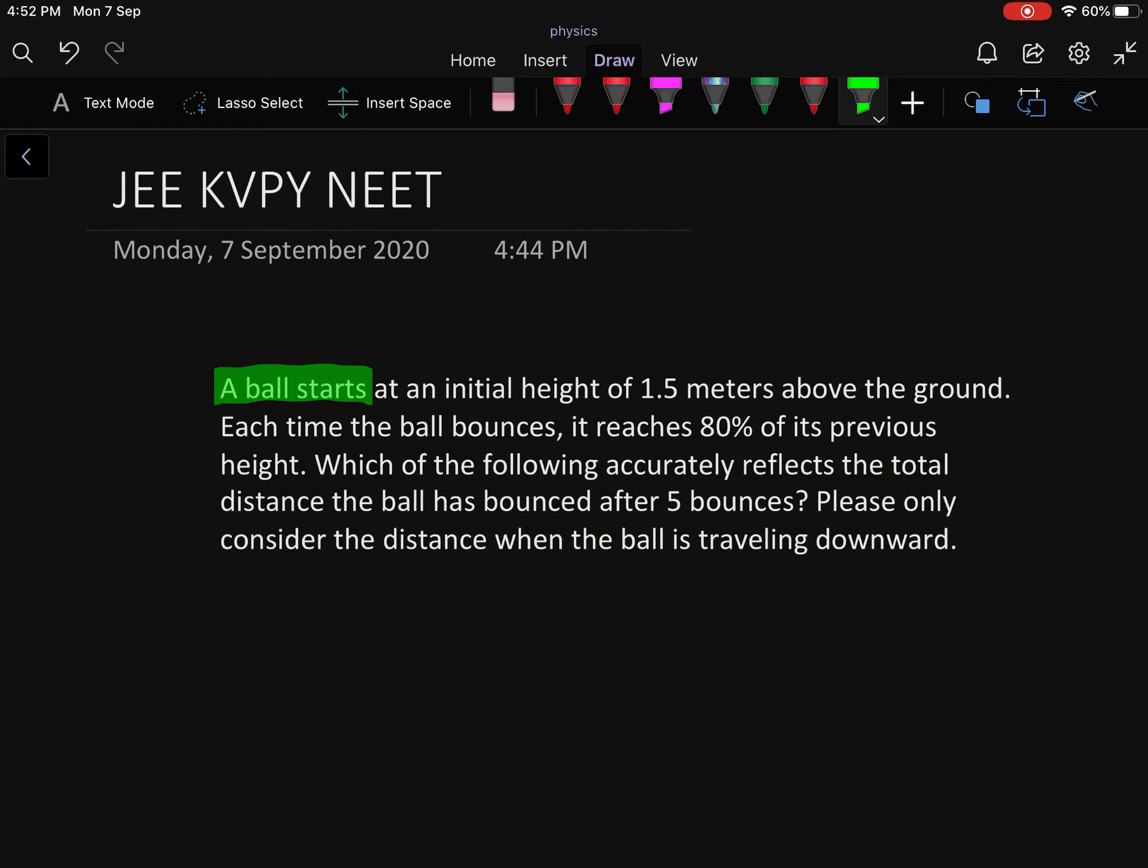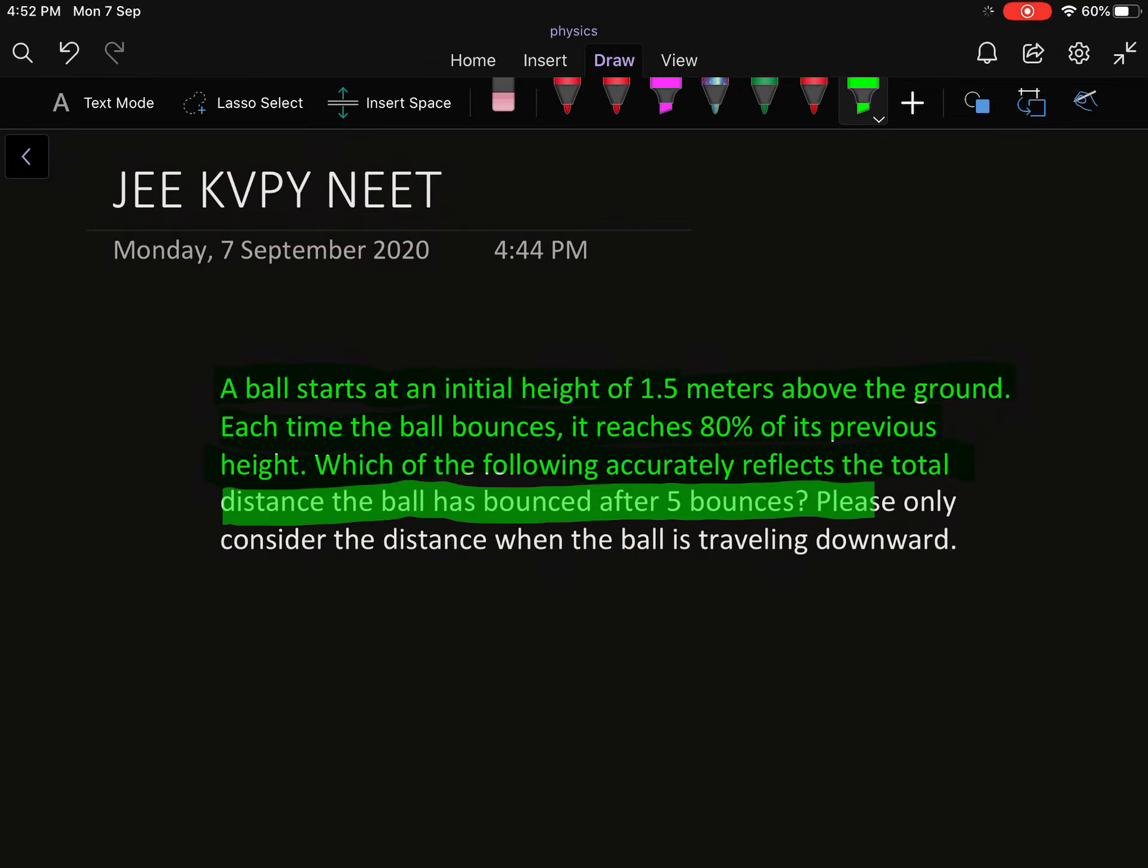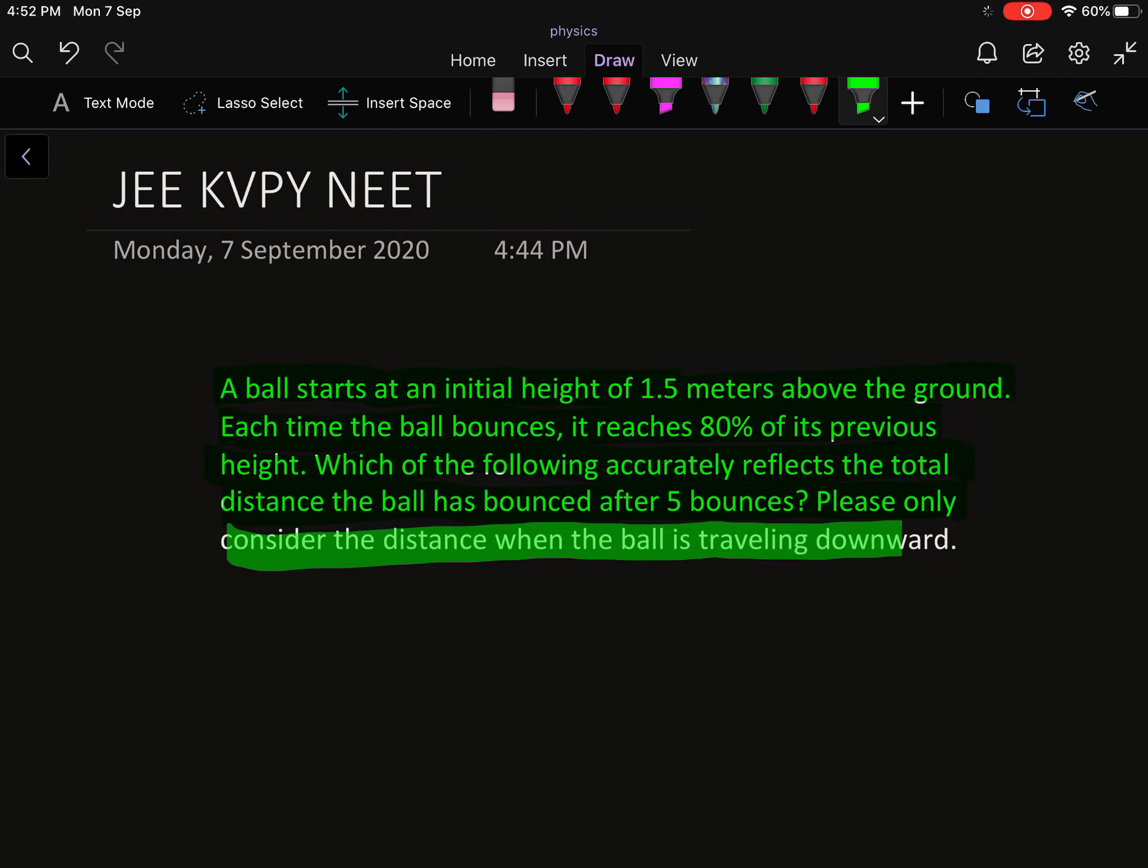A ball starts at an initial height of 1.5 meters above the ground. Each time the ball bounces, it reaches 80% of its previous height. Which of the following accurately reflects the total distance the ball has bounced after 5 bounces? Please only consider the distance when the ball is traveling downward.